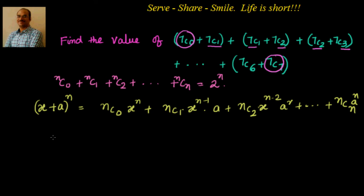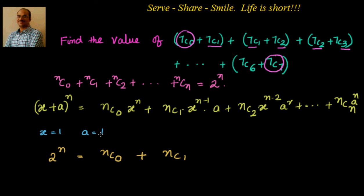Now let us say X and A are both equal to 1. Then X + A = 2, so 2^N equals NC0 × 1^N plus NC1 × 1^(N-1) × 1 plus NC2 × 1^(N-2) × 1^2, and so on. Since 1 to the power of anything is 1, all the X and A terms become 1, leaving us with NC0 plus NC1 plus NC2 plus NC3 up to NCn equals 2^N.